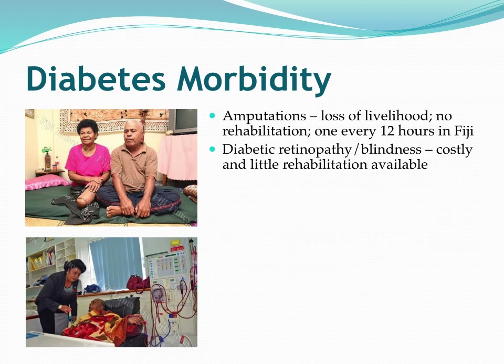We see diabetic retinopathy and blindness. If I take away somebody's eyesight, that's very costly to them socially as well as economically because they can't take care of themselves. Both amputations and diabetic retinopathy are very costly — how do we support these individuals in societies that don't have strong economic bases here in the Pacific?